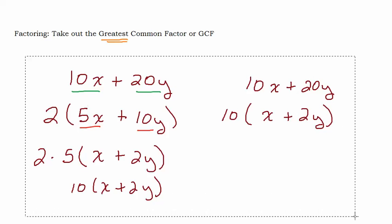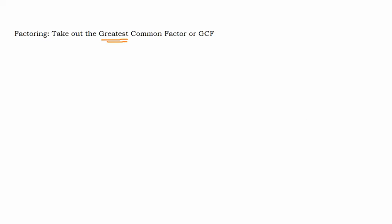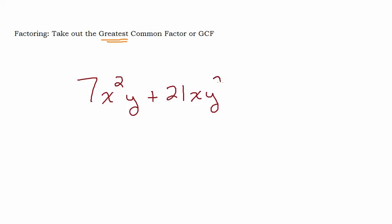Let's try some that have variables in them — it'll get a little more difficult. Let's try something like 7x squared y plus 21xy squared. That's getting a little fancy. We still have two terms: 7x squared y and 21xy squared. Remember, x squared means x times x. So basically 7x squared y breaks down into its individual factors. I want to show you how we're going to get our answer — I could write 21 as 3 times 7, so let's really break it down.